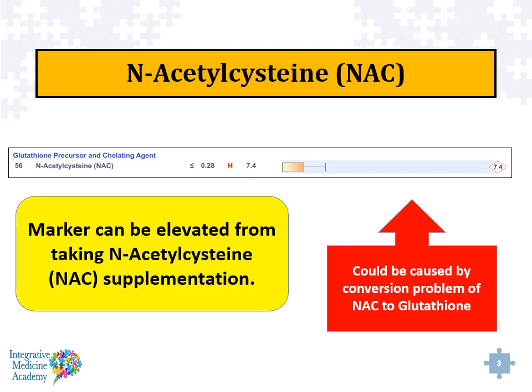Under the nutritional marker section of the organic acid test is a chemical called N-Acetyl Cysteine, NAC. In most organic acid tests, the level will be normal or on the low end of normal, and that is normal for the test because it means that there is adequate conversion to glutathione. The marker could be elevated from taking N-Acetyl Cysteine supplementation, and that's fairly common.